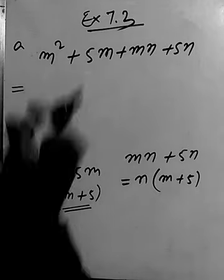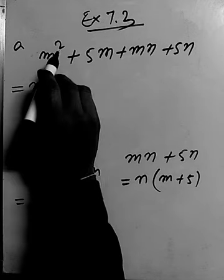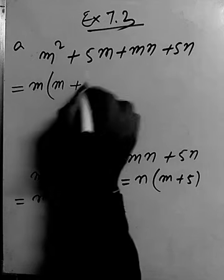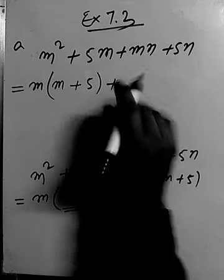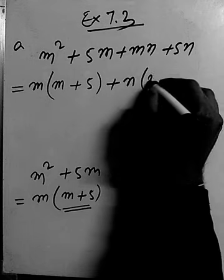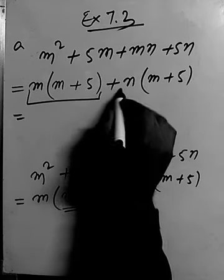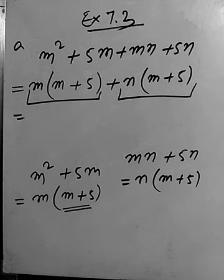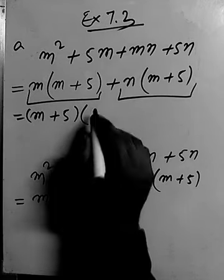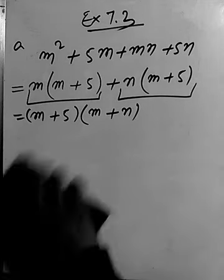From the first two terms we take m common: m squared gives us m to the power 1 remaining, so we get m(m plus 5). From the last two terms we take n common, giving n(m plus 5). Then (m plus 5) is the overall common factor, so taking it out leaves us with (m plus 5)(m plus n). We have performed our factorization.